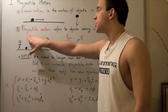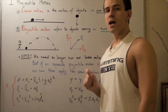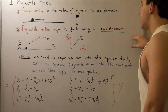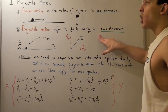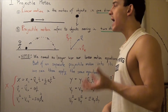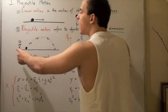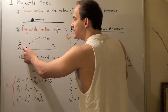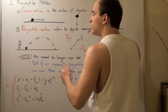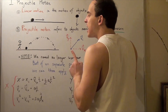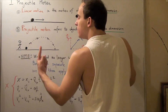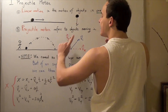Now let's look at projectile motion. Projectile motion refers to objects moving in two dimensions, so our objects aren't moving in a straight line — they're moving in a curved path. For example, if our soccer player runs and kicks a ball, that ball will travel up as well as sideways, because the force with which our soccer player kicks the ball points at an angle.